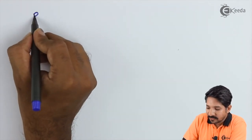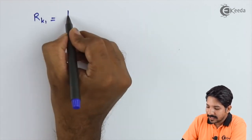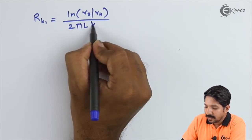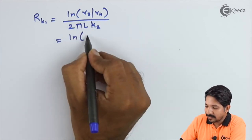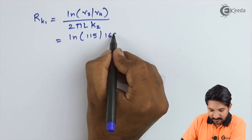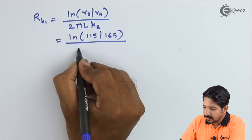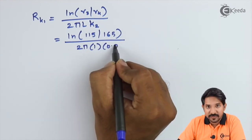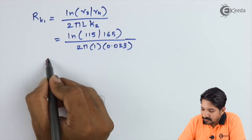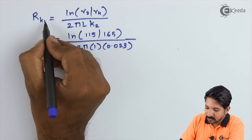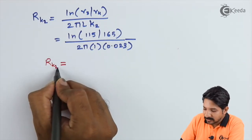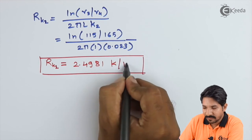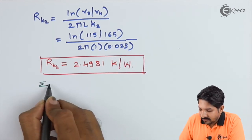Finding RK2 — the thermal resistance offered by the second insulation layer. The formula is ln(r4/r3) / (2π·L·k2). Substituting: ln(165/115) / (2π × 1 × 0.023). Therefore RK2 = 2.4981 K/W.